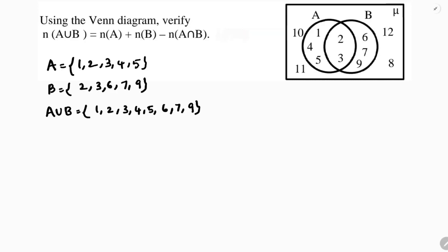Now A∩B. A∩B contains only the common elements: 2 and 3. So A∩B = {2, 3}.